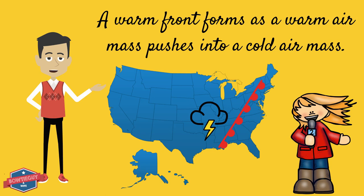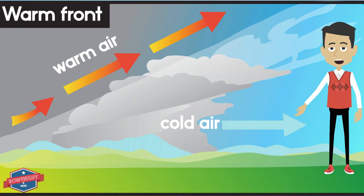A warm front forms as a warm air mass pushes into a cold air mass. The warm air slowly moves up over the cold air. Layers of gray clouds and steady precipitation are seen when a warm front moves into an area.